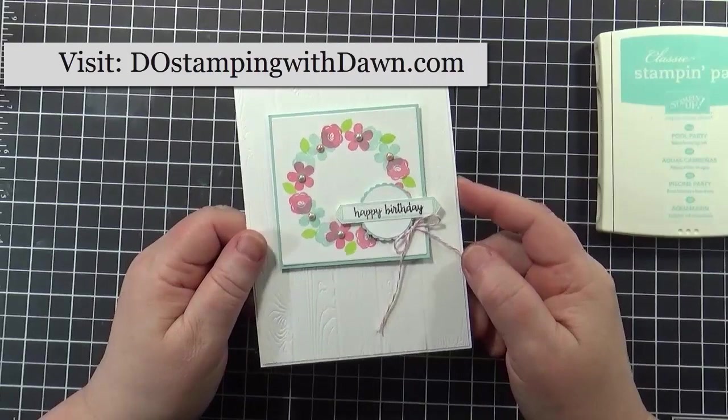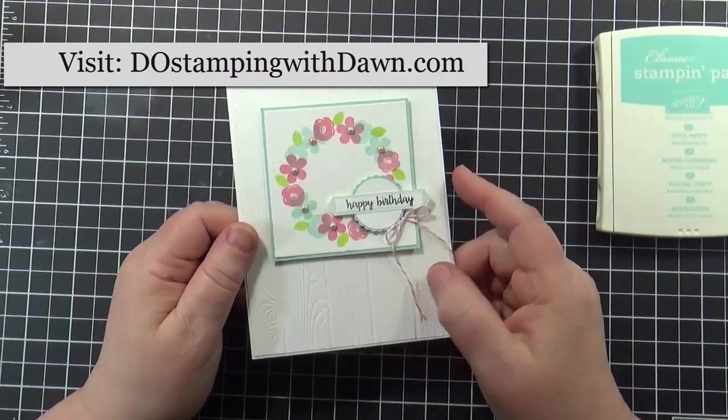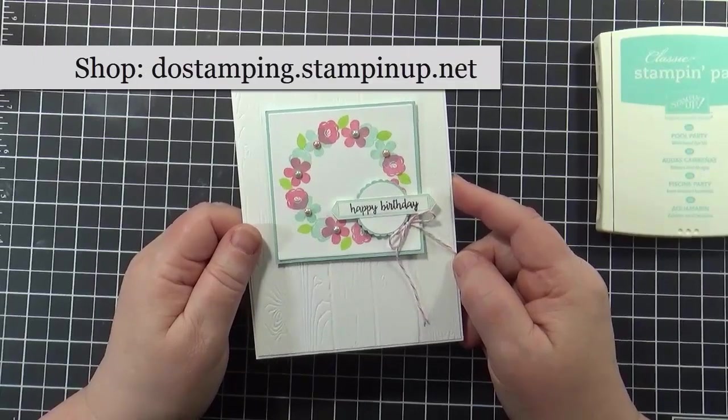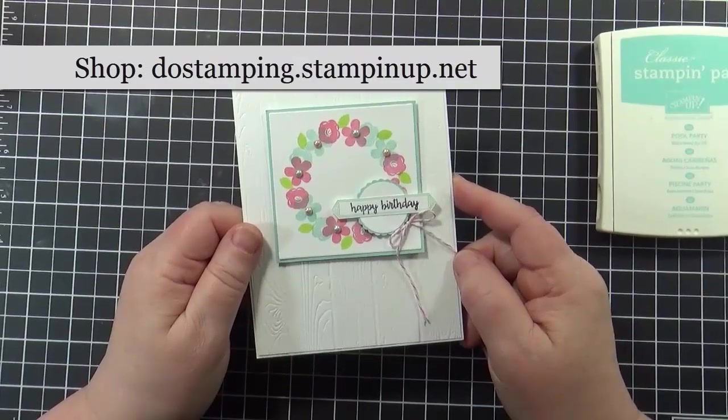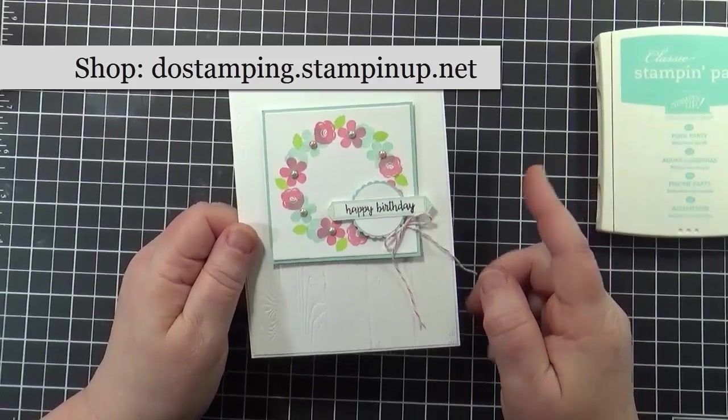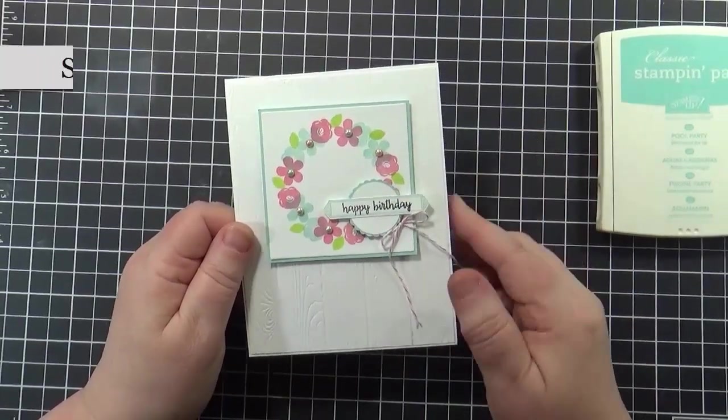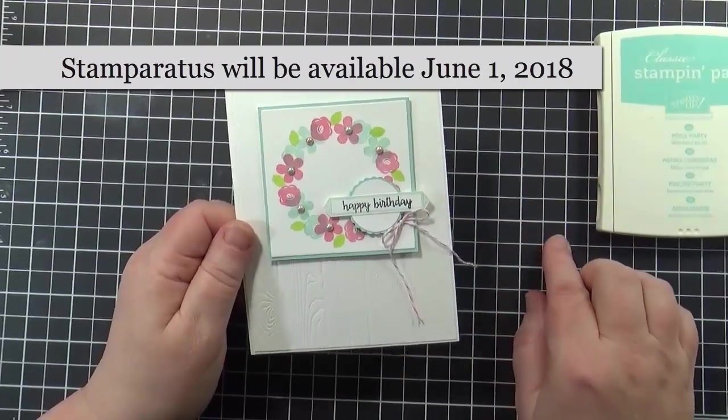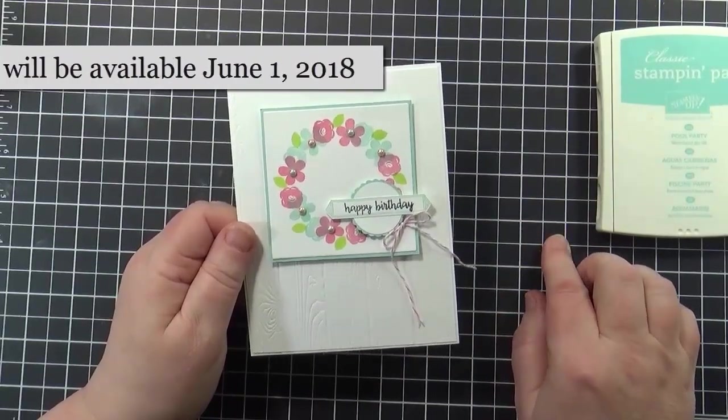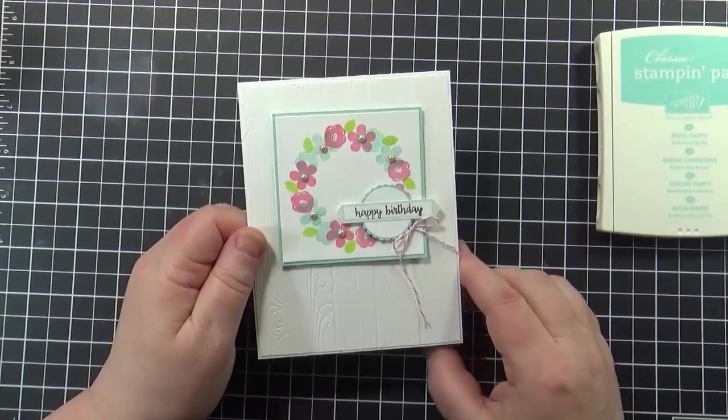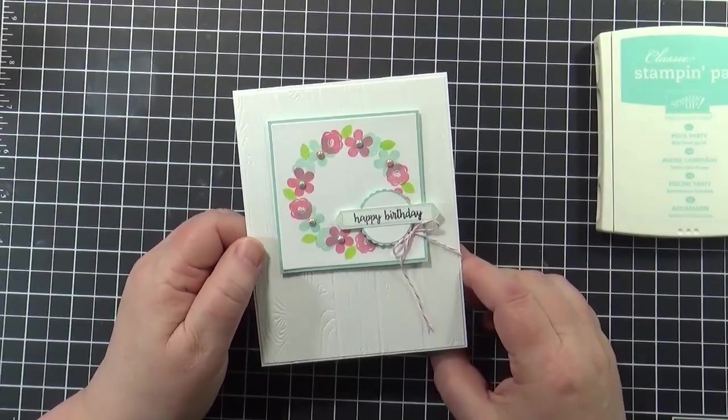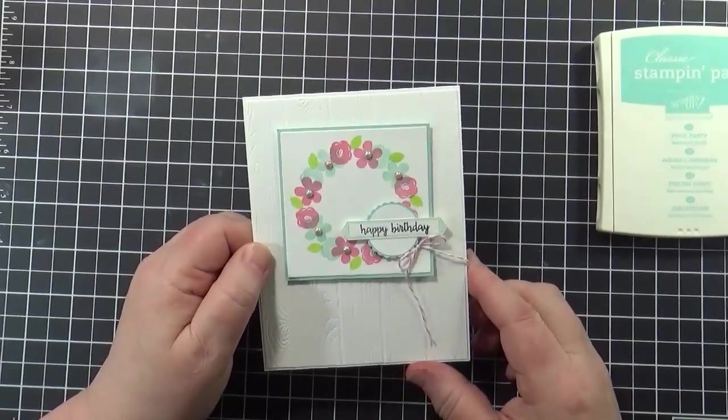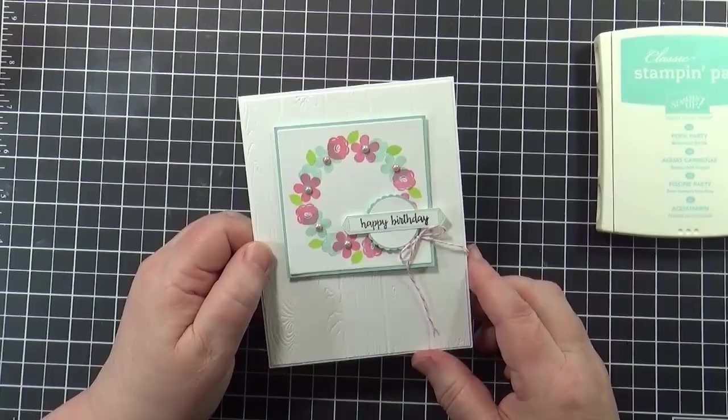So I hope you enjoyed that. If you're looking for more inspiration, be sure to visit my blog at DoStampingWithDawn.com. And if you're looking to purchase Stampin' Up! products, you can do that at my Stampin' Up! store which is DoStamping.StampinUp.net. And just be aware the Stamparatus is not going to be available until June 1st and that's when the new catalog comes out. So I know many of you are waiting and I know some of you already have it, so be patient just a little bit longer and it's gonna pay off because you're gonna love it. Alright, thanks!